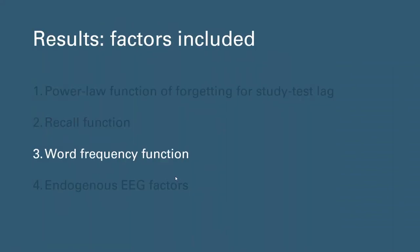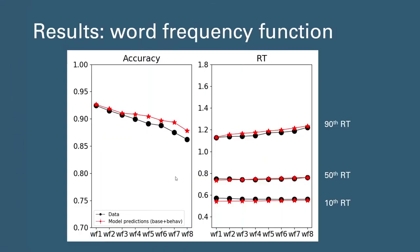And lastly, looking at the linear word frequency function for exogenous variables, we can also see that we did observe decreased performance as the word frequency of the item increased as expected, and the inclusion of the word frequency function well captured this effect.